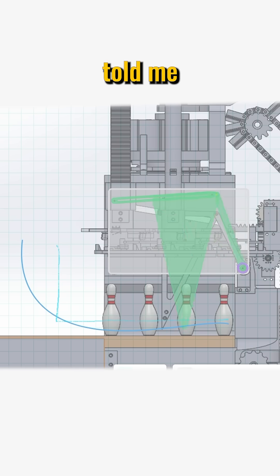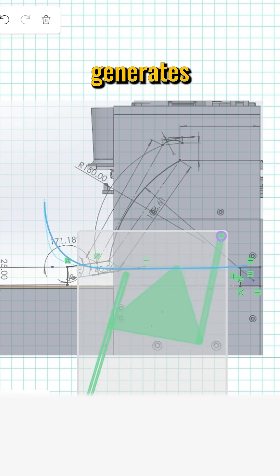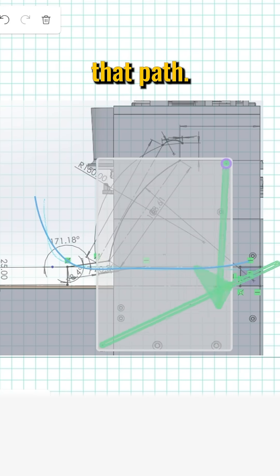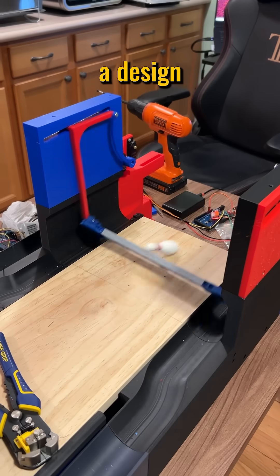Back to the drawing board. A friend told me about this awesome website called motiongen.io that lets you draw a path, and it generates different mechanisms that follow that path. After a few tries, I found a design that actually worked.